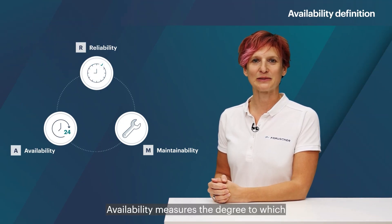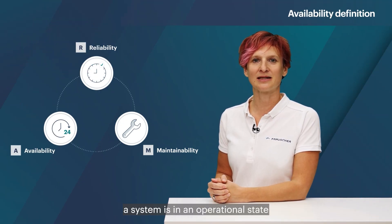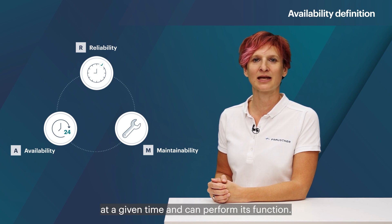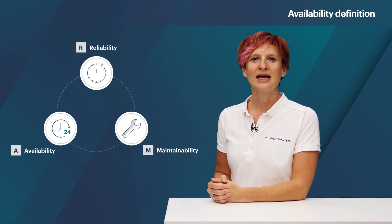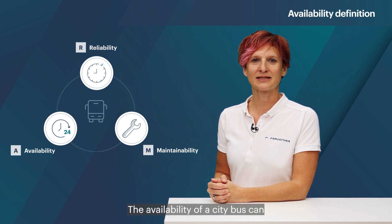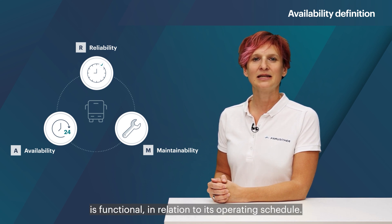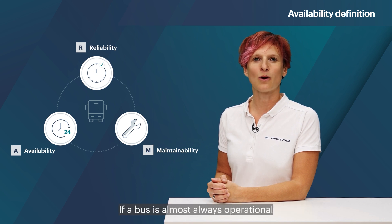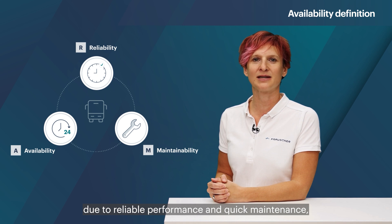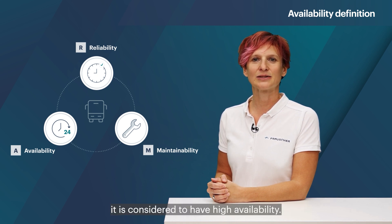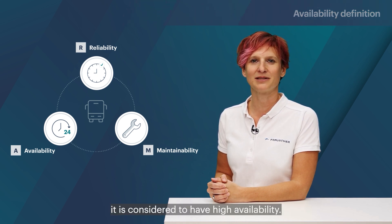Availability measures the degree to which a system is in an operational state at a given time and can perform its function. The availability of a city bus can be defined as the duration of time that the bus is functional in relation to its operating schedule. If a bus is almost always operational due to reliable performance and quick maintenance, it is considered to have high availability.